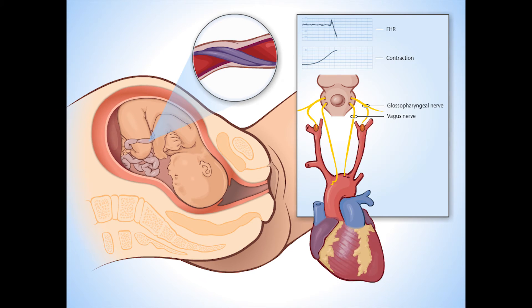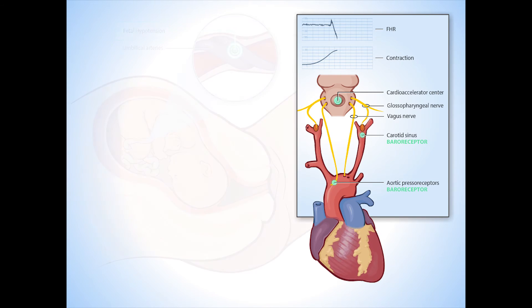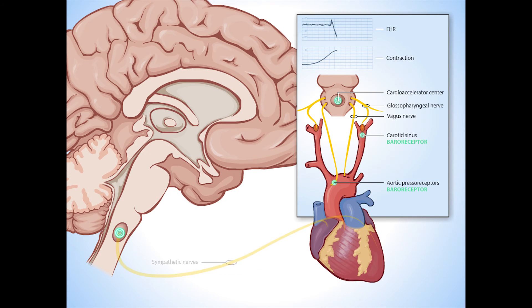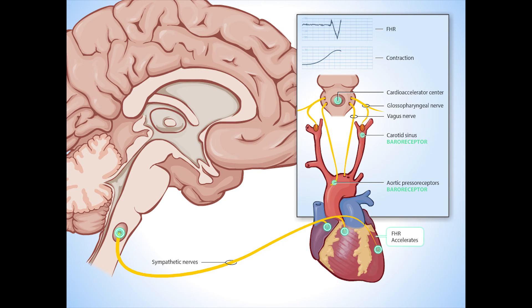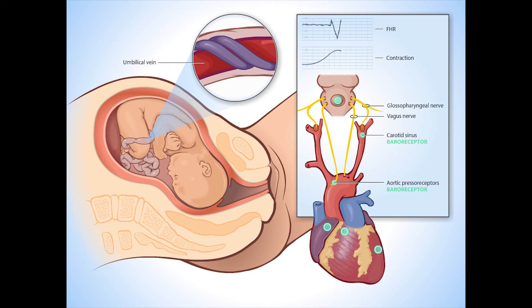As the contraction decreases in strength, the umbilical arteries are released, causing the fetus to return to a state of hypotension. Again, fetal hypotension triggers baroreceptors to send signals to the cardio-accelerator center. Stimulation of sympathetic nerves causes the fetal heart rate to abruptly increase from the nadir. This is called a secondary acceleration. Once the contraction ends, the umbilical vein is also released, and the fetal heart rate rapidly returns to baseline.